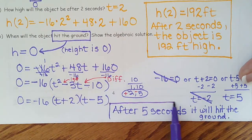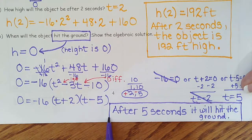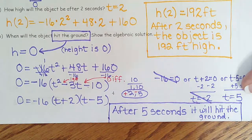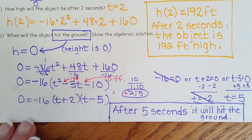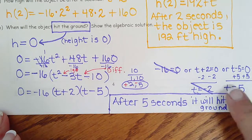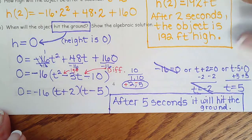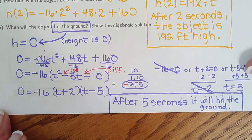So the first one is never true. 16 never can equal 0. The second one came up negative, so I had to throw it out because time is positive. We can't go backwards in time. So after 5 seconds, we only had one positive answer. After 5 seconds, the object or it will hit the ground.